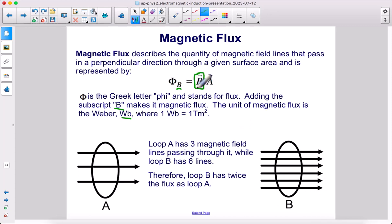This is like how strong is the magnetic field. Loop B has twice the flux as loop A. Twice the field lines going through means twice the flux.